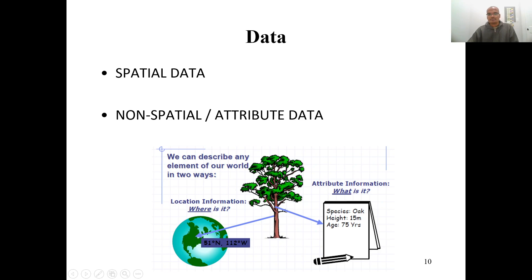Before using GIS, we must fundamentally understand data — especially data types. There are two types of data used in GIS: spatial data and non-spatial data. Non-spatial data is also called attribute data. Spatial data is about location — where a particular phenomenon, event, or entity is located. Non-spatial data describes what it is.